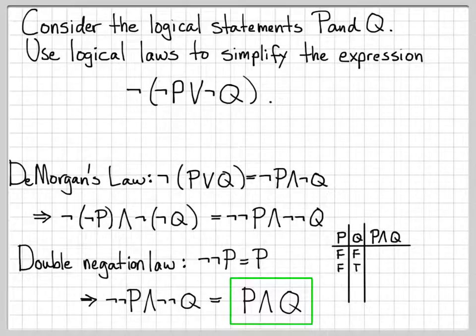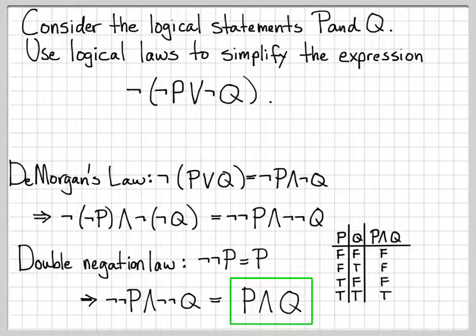First, fill in all the different combinations of P and Q. There are other examples you can watch on how to make truth tables, so we won't go through this too slowly. Then fill in the P and Q column. For this simplified logical expression, we end up with F, F, F, T.